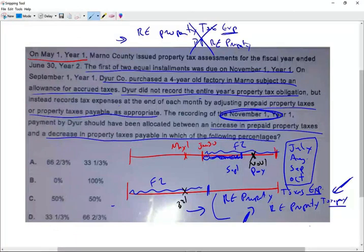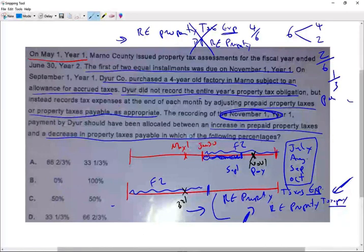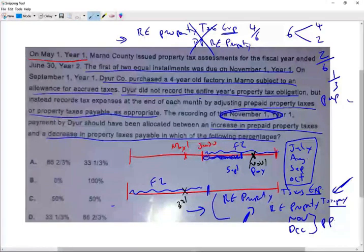Therefore, when we make the payment, we're going to reduce because the payment is for six months. Four of the six months, four-sixths, it's going to go to reduce the payable and two of the six, two-sixths, which is one third, will be prepaid for the month of November and December. This will be a prepaid because we paid it.